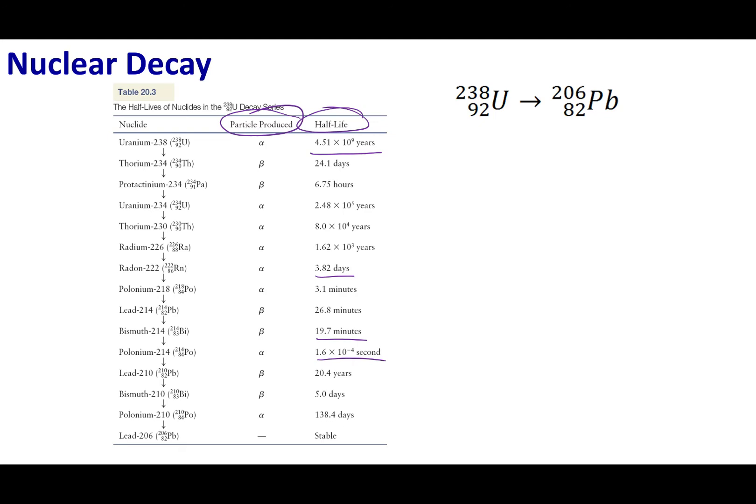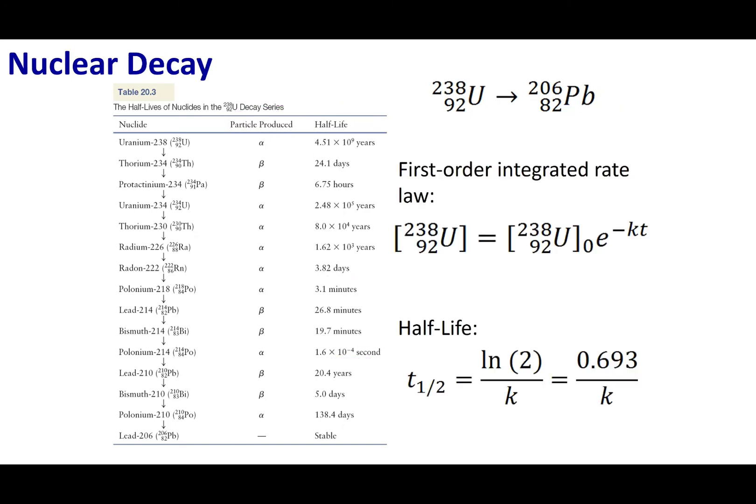Now what you have to know about radioactive decay is that these processes are generally unimolecular. So if our rate-determining step is unimolecular, that means that this reaction is going to follow first-order kinetics. So all the tools that we discussed in our kinetics chapter are applicable to this decay.